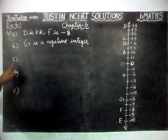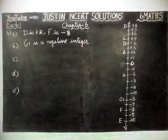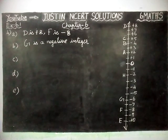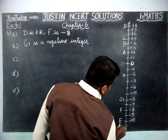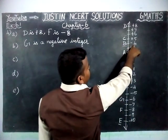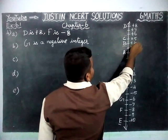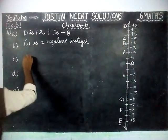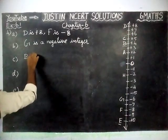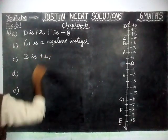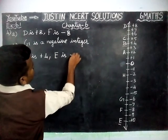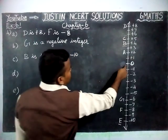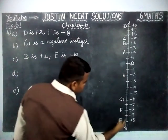Part C is: write integers for points B and E. B value is equal to plus 4, so B is plus 4. And E value is minus 10, because B is above 0 and E is below 0.